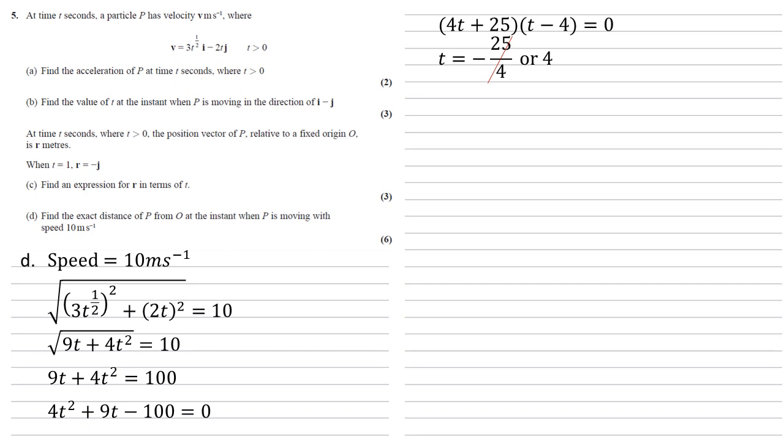We can now use this to find the exact distance. So we've got our position vector. We're going to substitute 4 into that. So we've got 2 times 4 to the power of 3 over 2i minus 4 squared j minus 2i. This simplifies to 16i minus 16j minus 2i, which is 14i minus 16j.